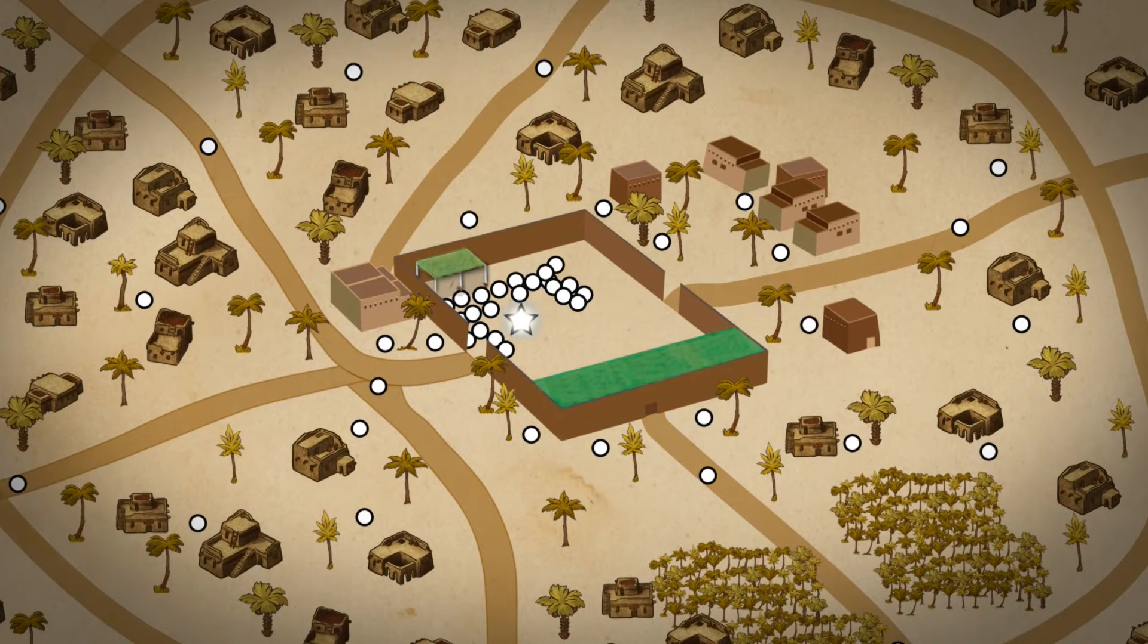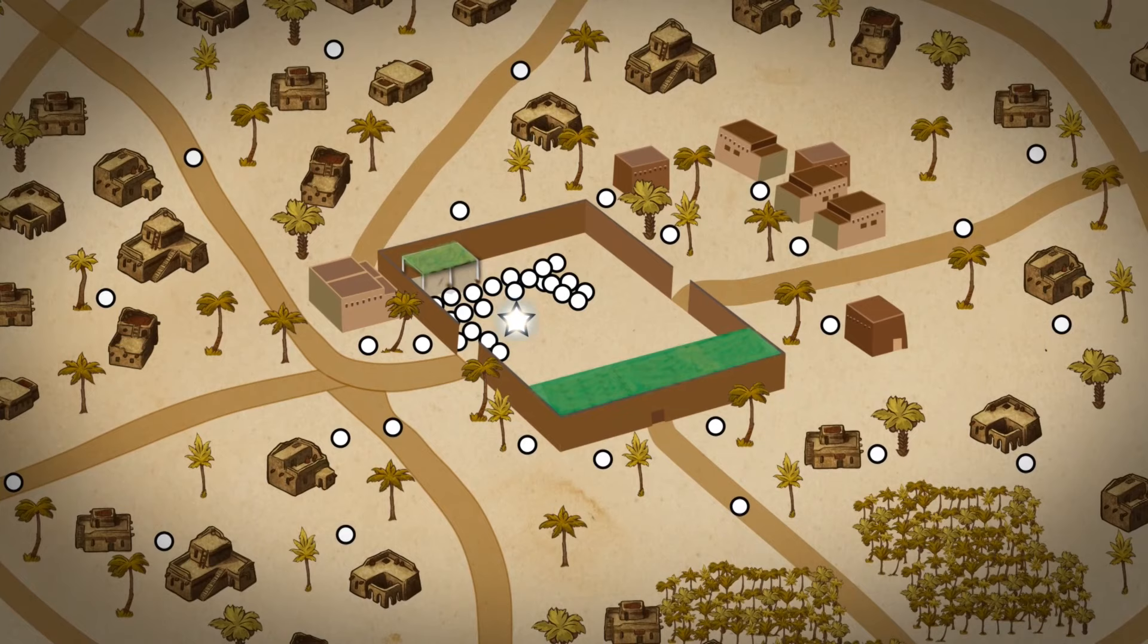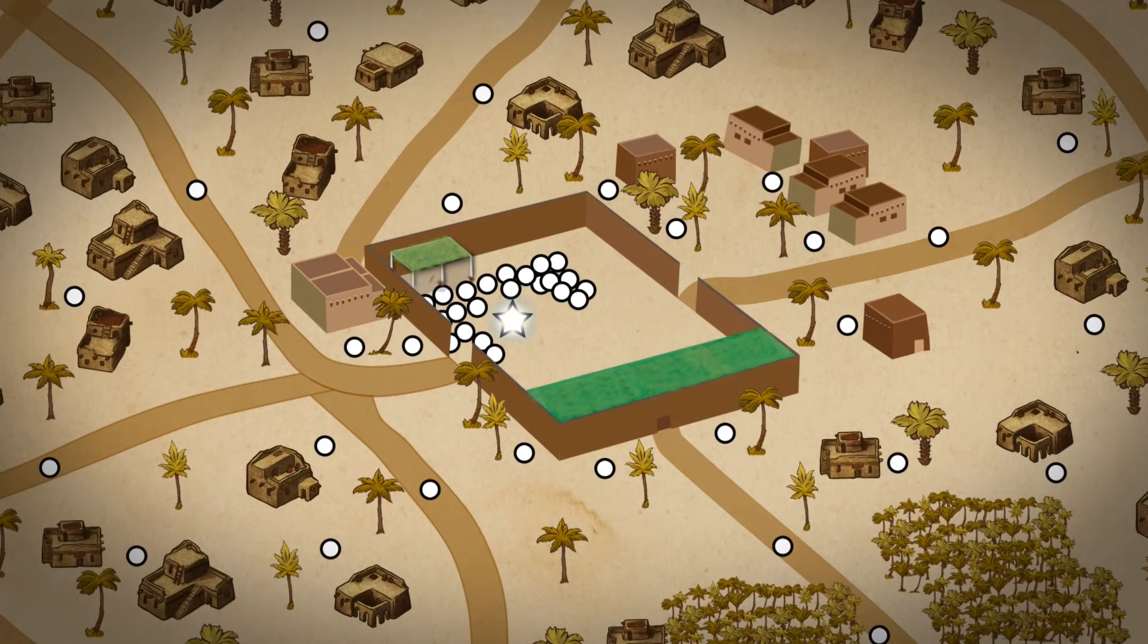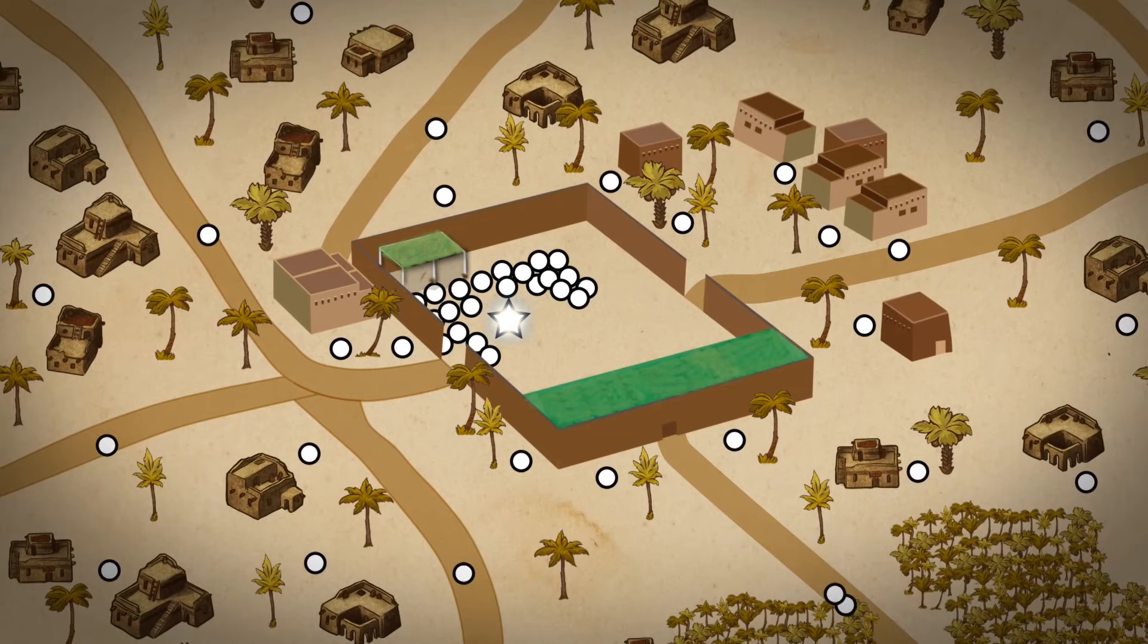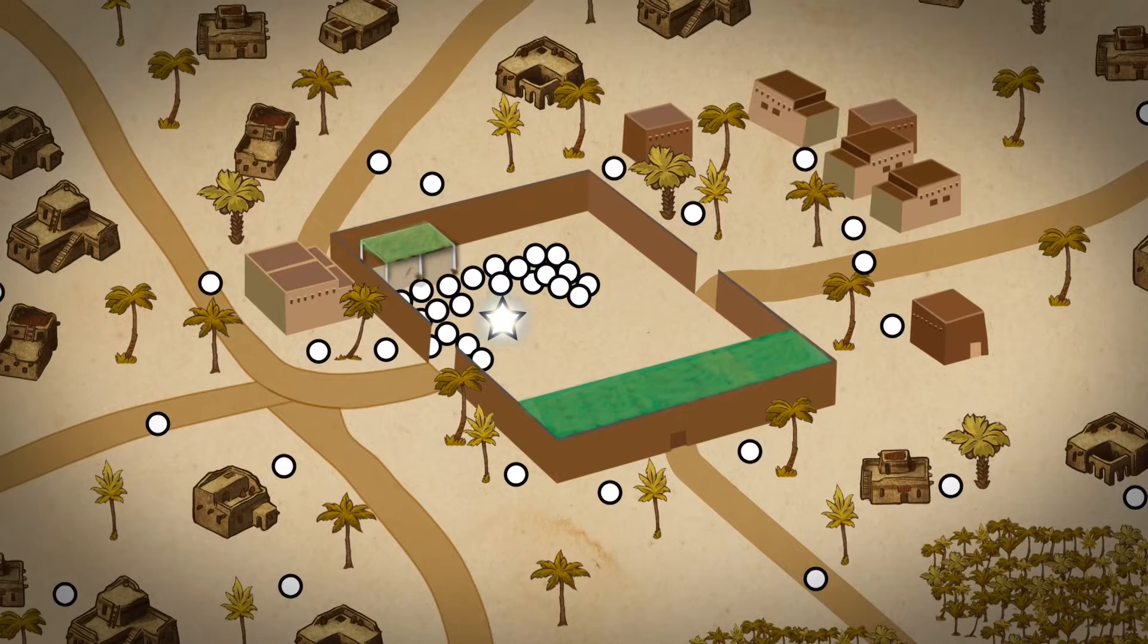The Messenger of Allah immediately convened the war council. He consulted with his companions whether to stay in Medina and wage a defensive war or whether to go out of the city and conduct an offensive war. Although the Prophet was in favor of staying in Medina and making a war of defense, in the end it was decided to go out of the city and conduct an offensive war in accordance with the decision of the majority.